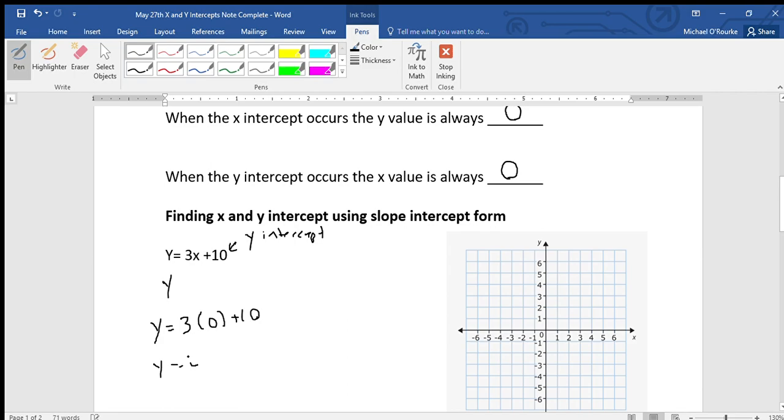So y would equal ten—that was our y-intercept. If I were to graph this, it would be up here, it's going up by twos, so I'm going to put a point right there. Now let's find the x-intercept.